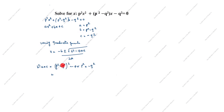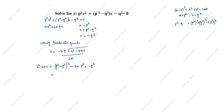This is an (a - b)² formula expansion. What is the (a - b)² formula? It is a² + b² - 2ab. Here, a = p² and b = q². So (p² - q²)² = (p²)² + (q²)² - 2p²q². We write this expansion out: p⁴ + q⁴ - 2p²q².